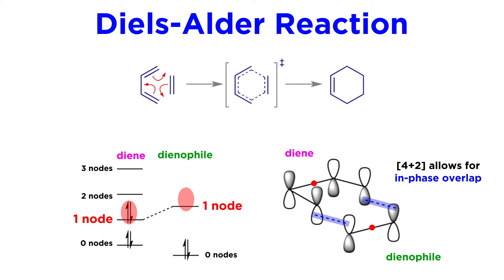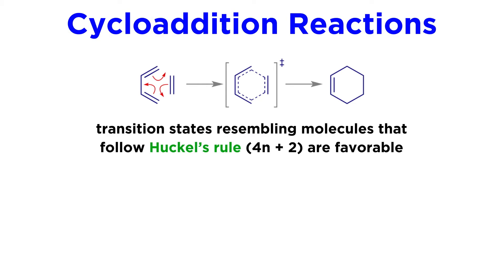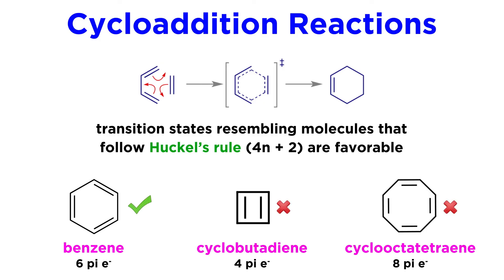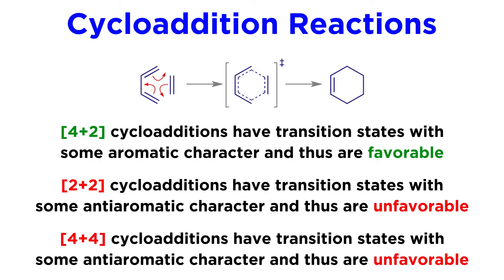Due to this orbital overlap, the transition state of a 4+2 cycloaddition has some aromatic character, which is a stabilizing feature. A more stable transition state means a lower activation energy and therefore a more favorable or faster reaction. We can see how the transition states of the other configurations prohibit those reactions, as Hückel's rule for aromaticity is 4n+2. Benzene works, but things like cyclobutadiene and cyclooctatetraene do not — instead they are anti-aromatic, which is a destabilizing feature. So if we were to try 2+2 or 4+4 cycloadditions, they would have to surpass anti-aromatic transition states, which is highly energetically unfavorable.